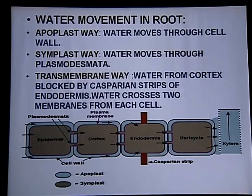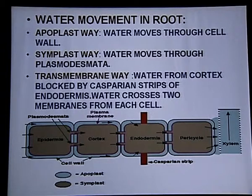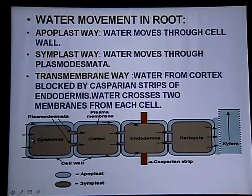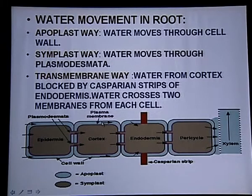Water movement in root occurs through three pathways: apoplast pathway, symplast pathway, and transmembrane pathway. In the apoplast pathway, water moves through the cell wall. Looking at the diagram, the blue color shows the cell wall — when water moves through the cell wall, that is called the apoplast pathway.